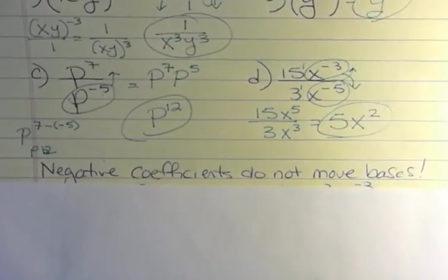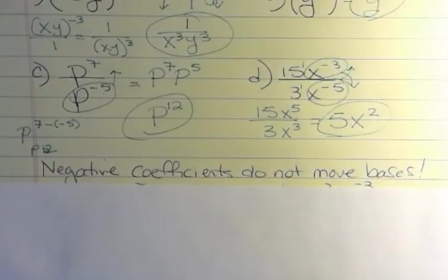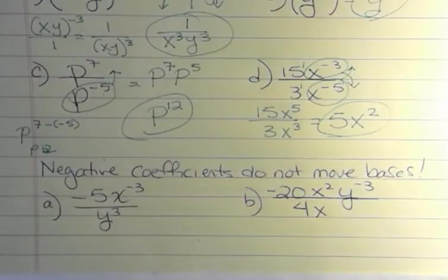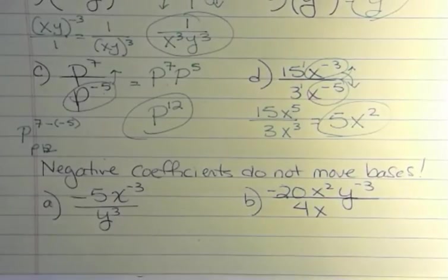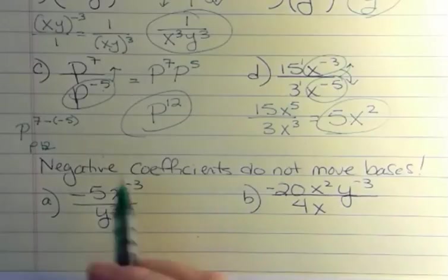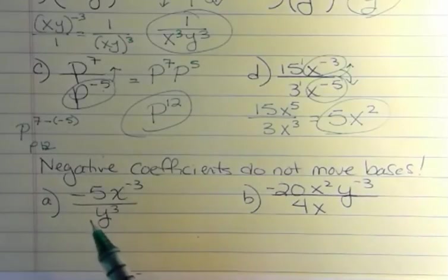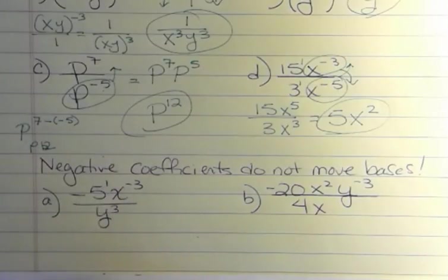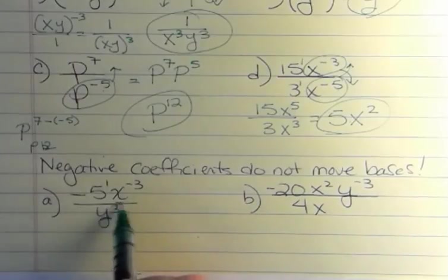Negative coefficients do not move bases. Negative powers move bases. Remember, the coefficient is the number out front. So I want you to see this one. When people see this after they've started moving things with negatives, they want to drop this negative 5 down. That's not anything, no rule that I'm telling you. This power is 1. That's positive. It's not going anywhere. This also is positive. It's not going anywhere.